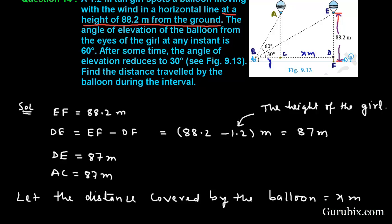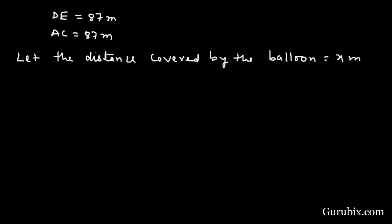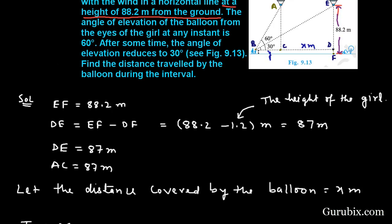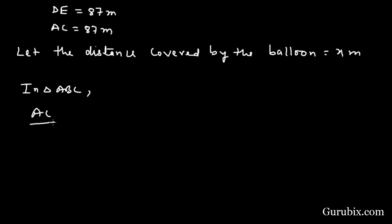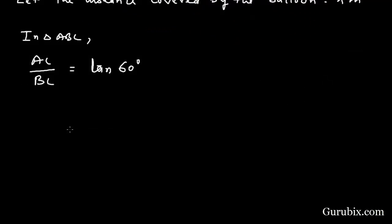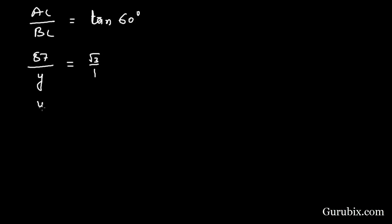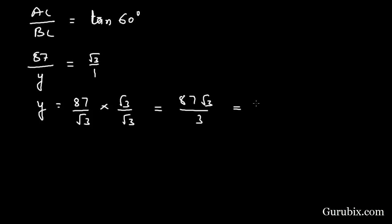In triangle ABC, we find the ratio AC over BC which equals tan theta, where theta is 60 degrees. AC is 87 and BC is Y, and tan 60 equals root 3 over 1. This means Y equals 87 over root 3. Rationalizing: Y equals 87 root 3 over 3, which gives Y equals 29 root 3. This is equation number 1.